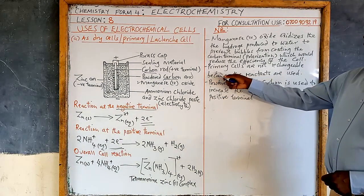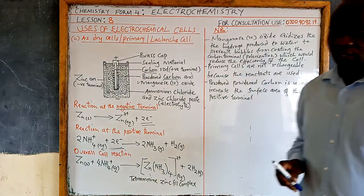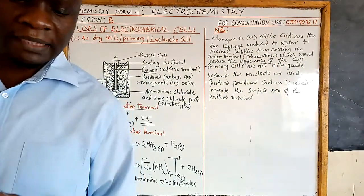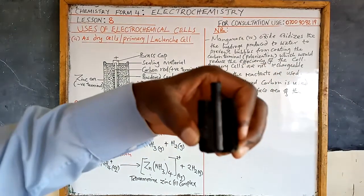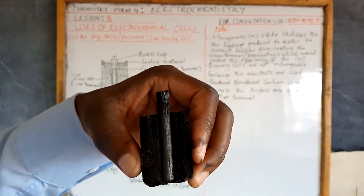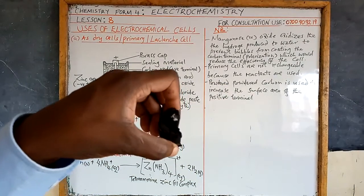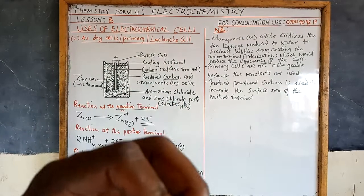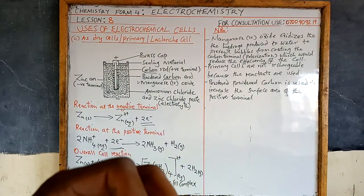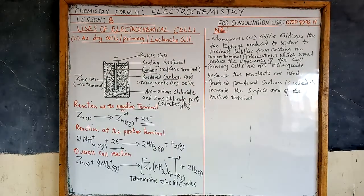It is important to note that primary cells are not rechargeable. The reason is that the chemicals used to make this cell get used up. Once they are used up, that is the end of that cell — it will not be useful again. You cannot recharge it unless you open it up, remove all the materials, and put in new materials, which is the same as making a new battery.